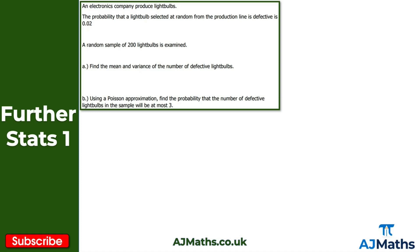For question 2, an electronics company produces light bulbs. The probability that a light bulb selected at random from the production line is defective is 0.02, and a random sample of 200 light bulbs is examined. For part A, we need to find the mean and variance of the number of defective light bulbs. Let x be the random variable following a binomial distribution with n equals 200 and p equals 0.02.